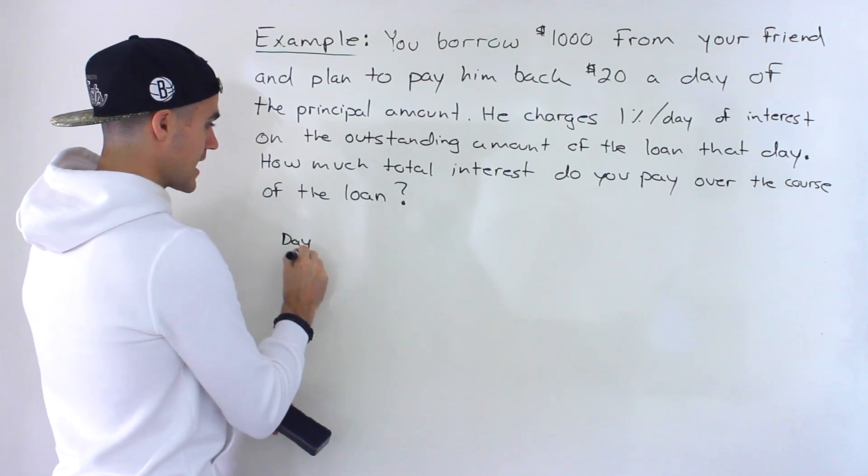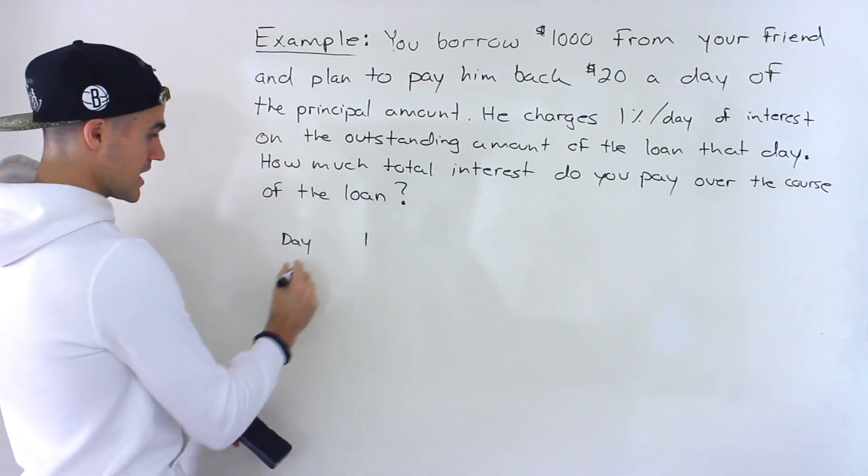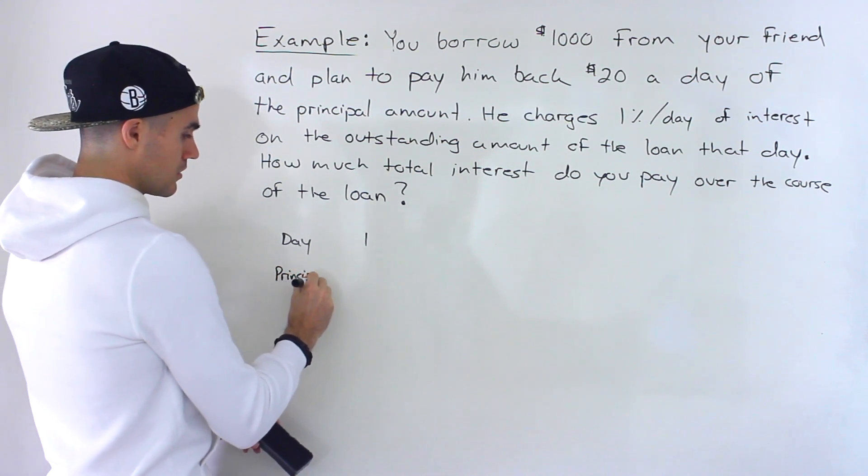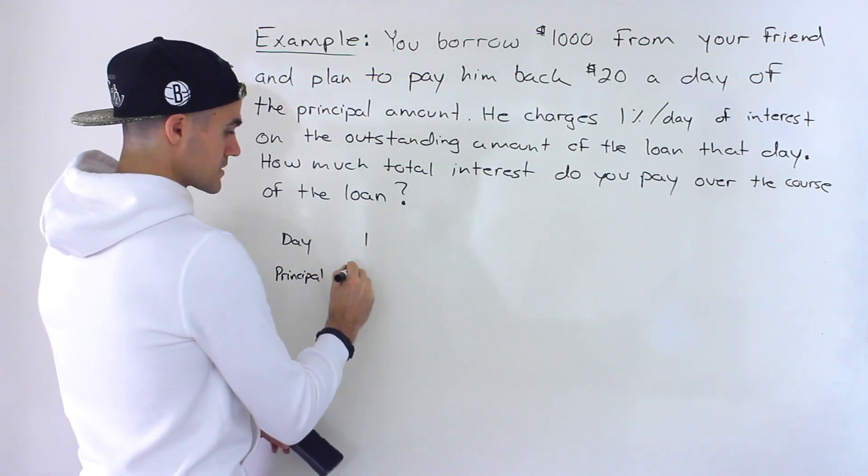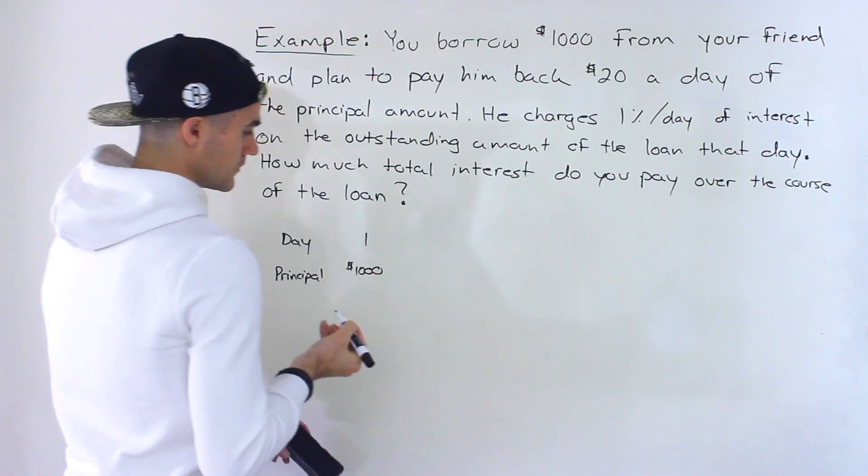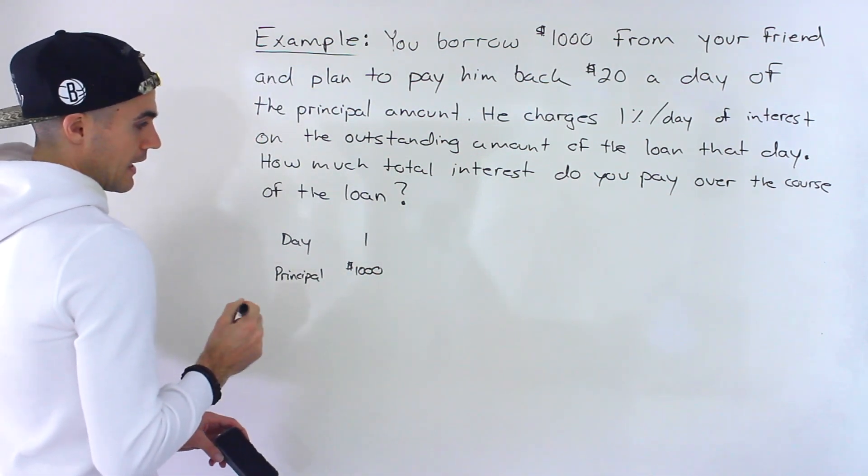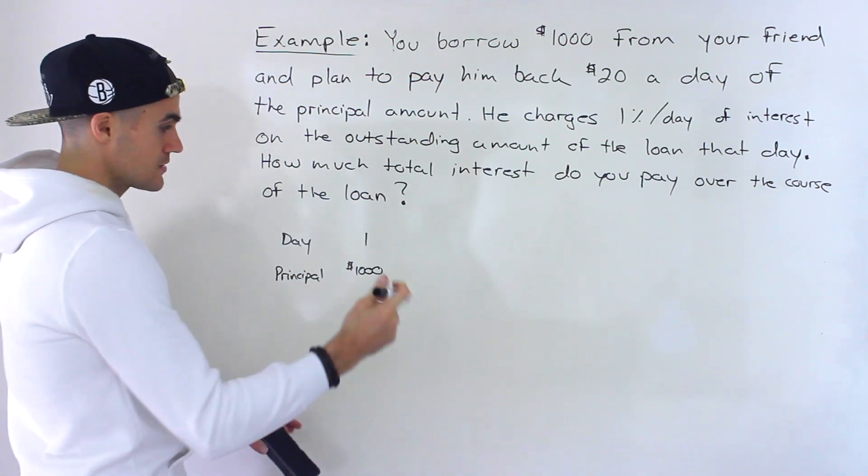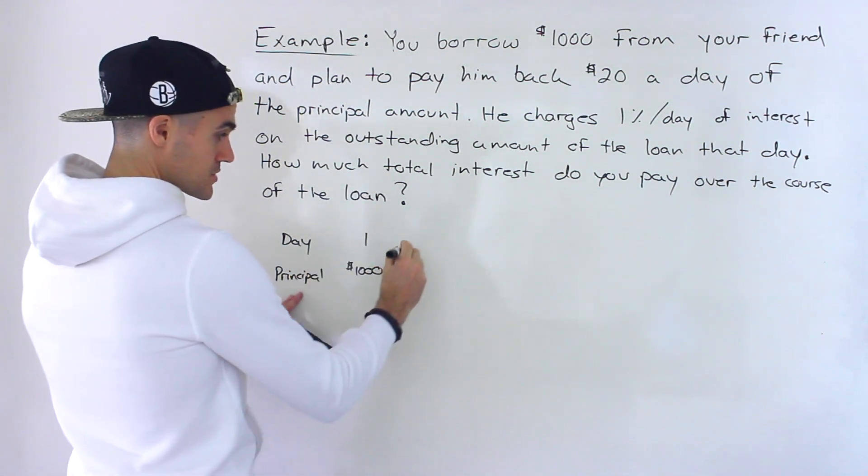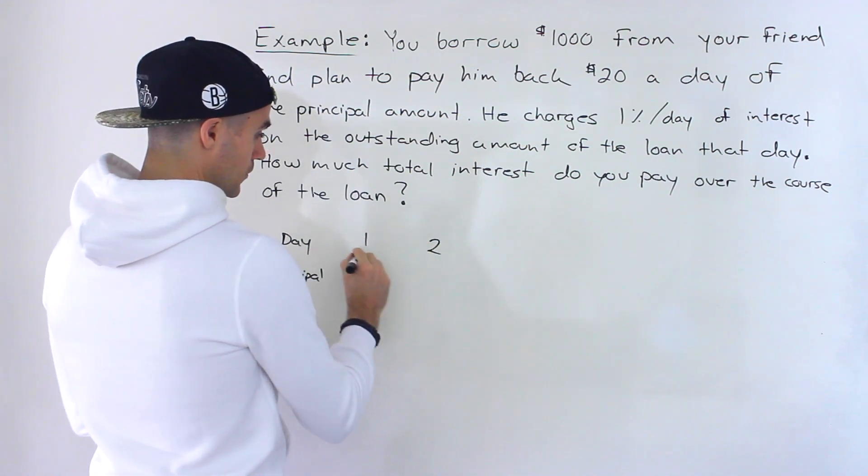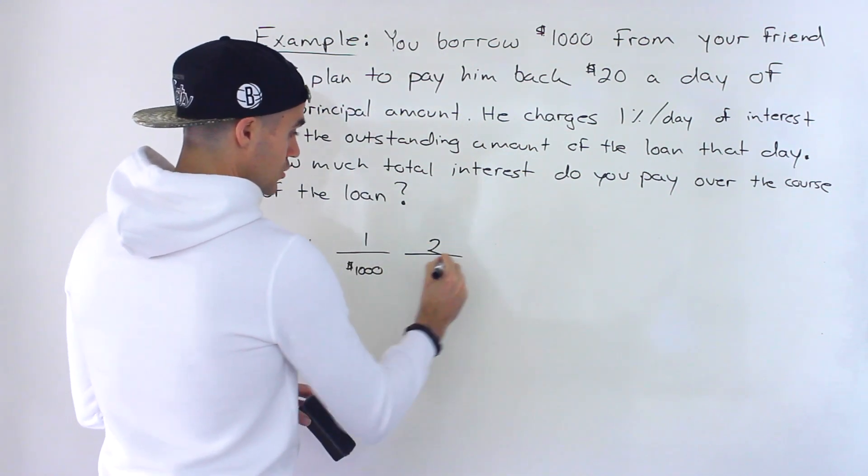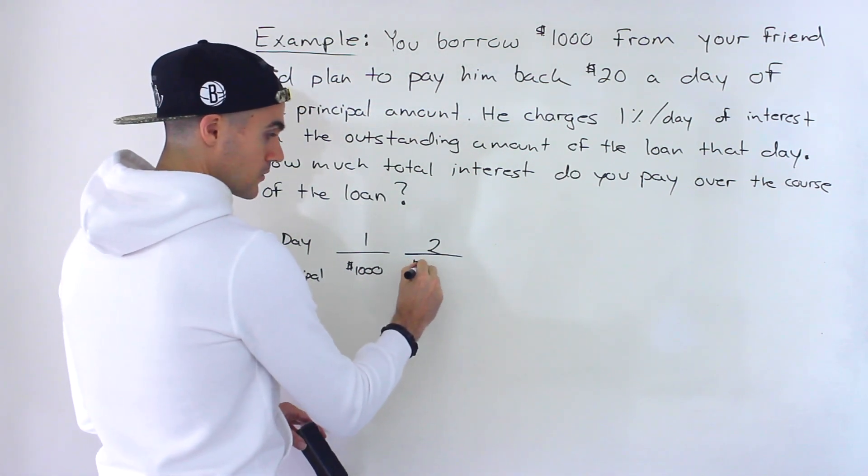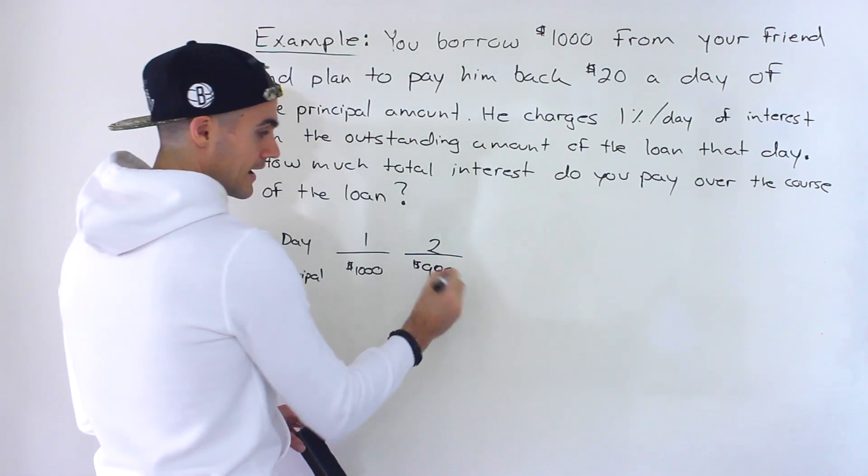So this is going to be day one. So day one, you're borrowing a principal amount of $1,000 from your friend. And what happens is you're going to be paying back $20 a day of principal. So in day two, what's going to happen is you're going to pay back $20 of this. So what's the principal amount going to be remaining? It's going to be $980.